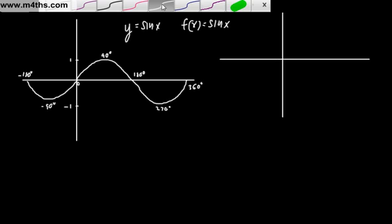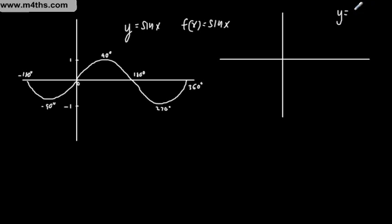What we'll do now is y is equal to cosine x, or, and I'm going to call this g(x), it's a different function. g(x) is cos x. Now cos x is very, very similar to sine x. In fact, it's just a phase shift of 90 degrees.